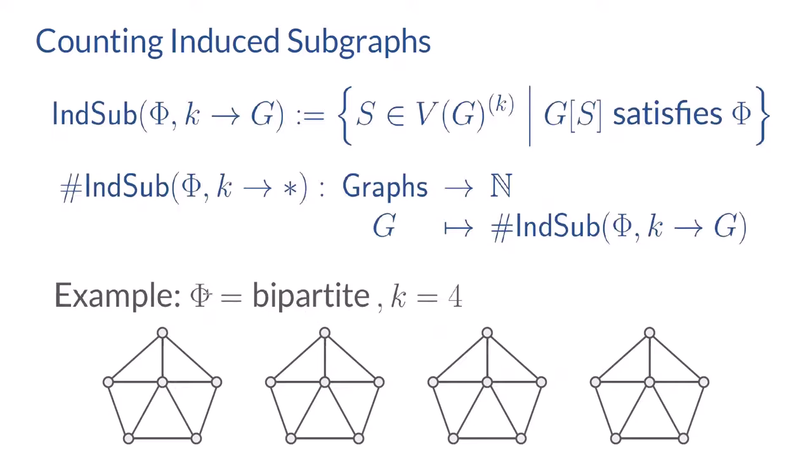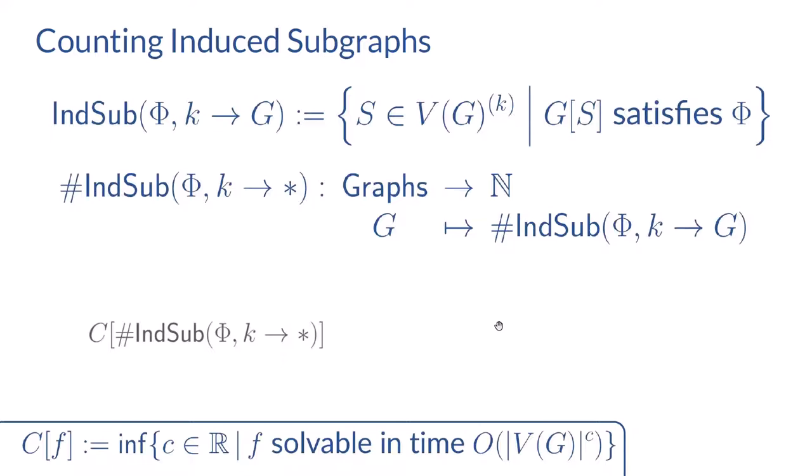Consider the following example: if φ is the property of being bipartite and k equals 4, then two of the shown graphs are induced subgraphs of size 4 satisfying φ, but two are not. The ones that fail have a triangle. Notably, we really care about induced subgraphs — taking all four vertices forces us to include all edges between them, which can enforce a triangle.